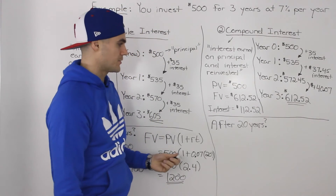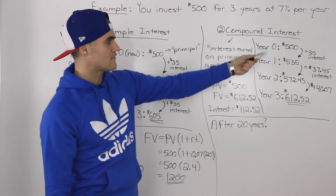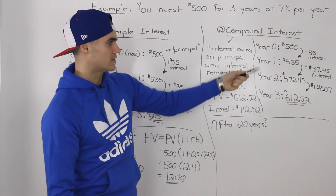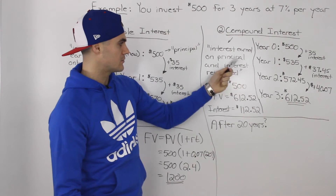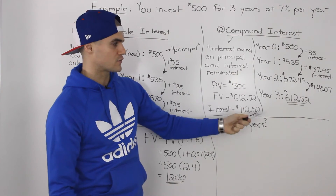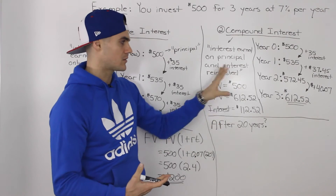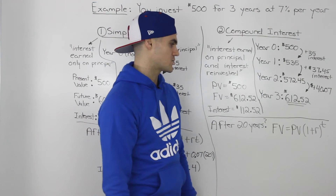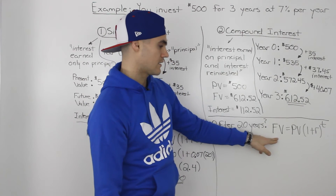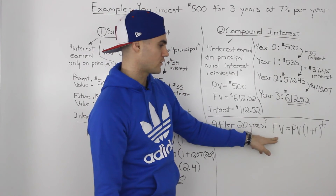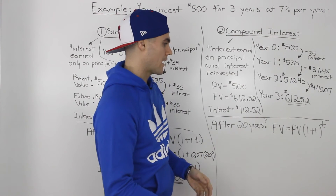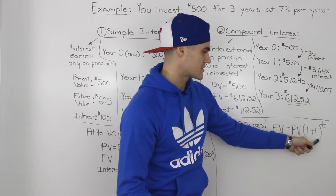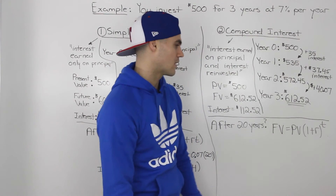What if I asked the future value of $500 at 7% compounded interest after 20 years? Rather than repeating the calculations, we can use the compound interest formula: future value equals the present value times (1 + r) to the power of t. Notice how this differs from the simple interest formula — here it's 1 plus r raised to the power of t, not multiplied.